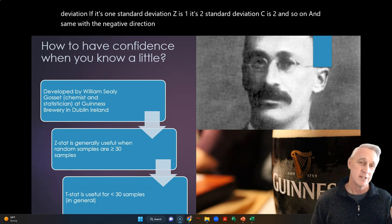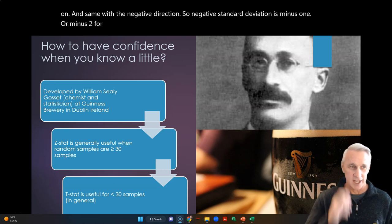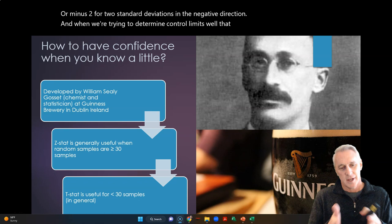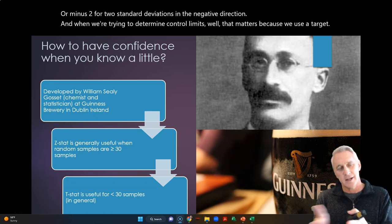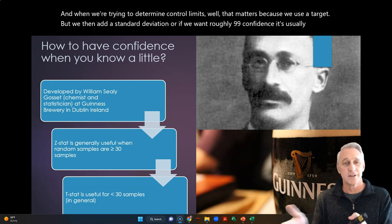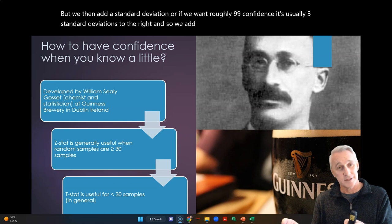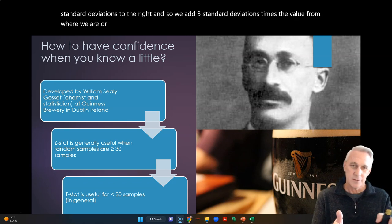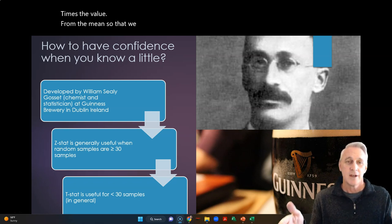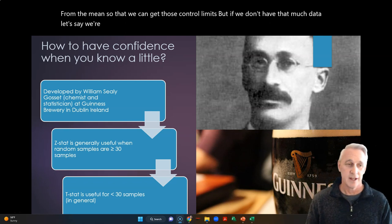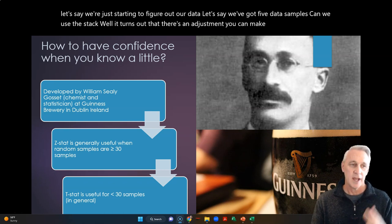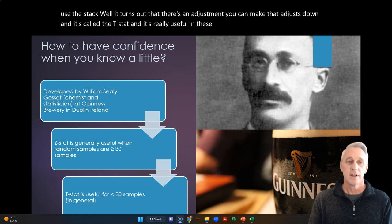And when we're trying to determine control limits, well, that matters because we use a target, but we then add a standard deviation. Or if we want roughly 99% confidence, it's usually three standard deviations to the right. And so we add three standard deviations times the value from where we are, or we subtract three standard deviations times the value from the mean so that we can get those control limits. But if we don't have that much data, let's say we're just starting to figure out our data. Let's say we've got five data samples. Can we use the z-stat? Well, it turns out that there's an adjustment you can make that adjusts down, and it's called the t-stat. And it's really useful in these cases when you have less than 30 samples.